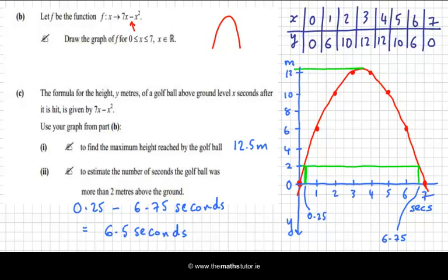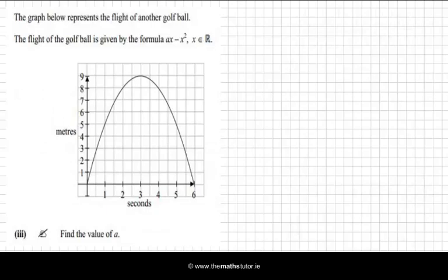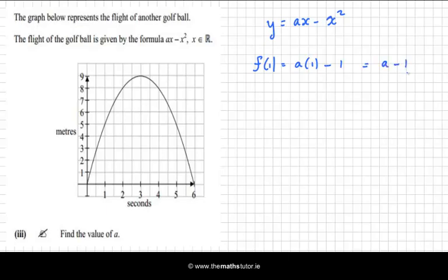Let's try another example. There's a third question which says: the graph below represents the flight of another golf ball, given by the formula ax minus x squared. We're asked to find the value of a. The function is y equals ax minus x squared. When x is 1, f of 1 equals a times 1 minus 1, which is a minus 1. From the graph, when x is 1, f of 1 is 5. So 5 equals a minus 1, which means a equals 6.